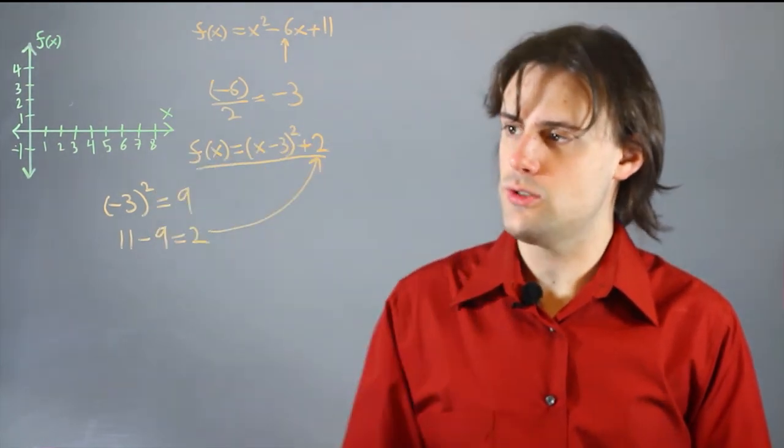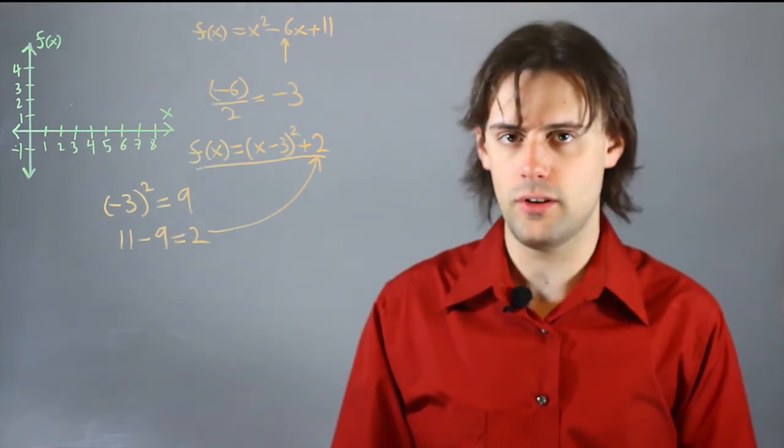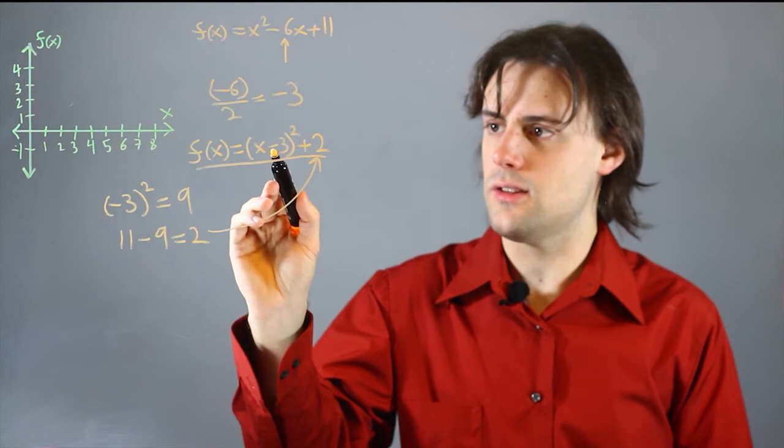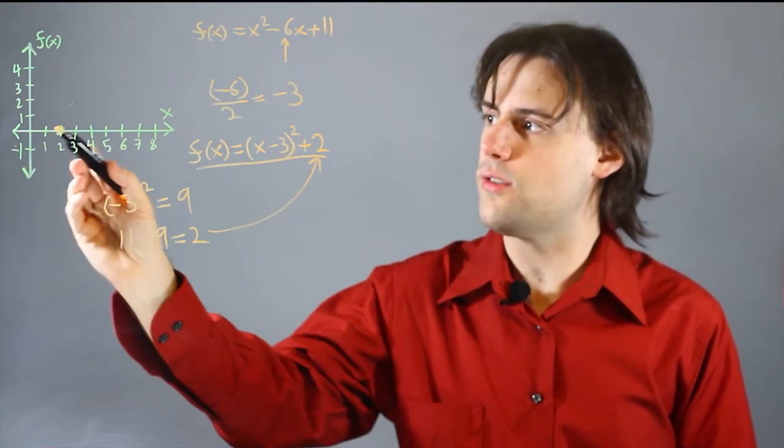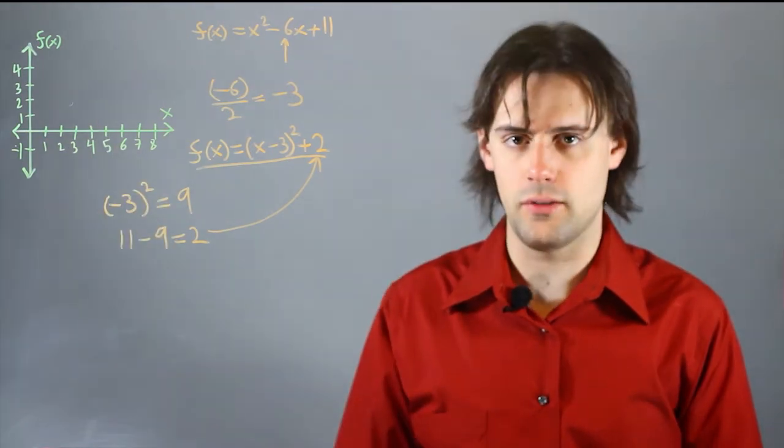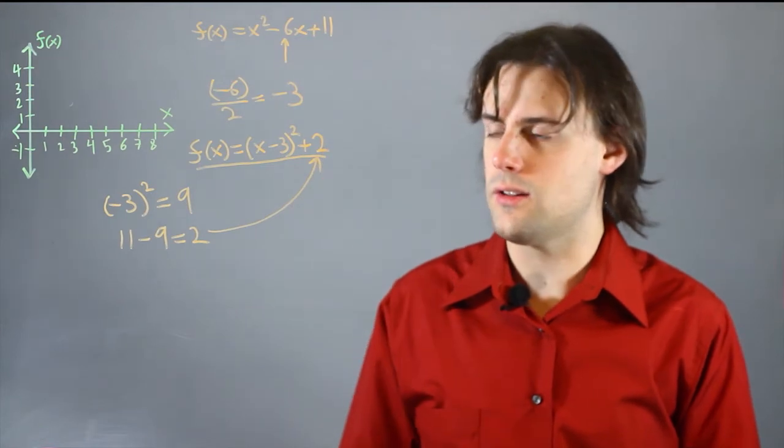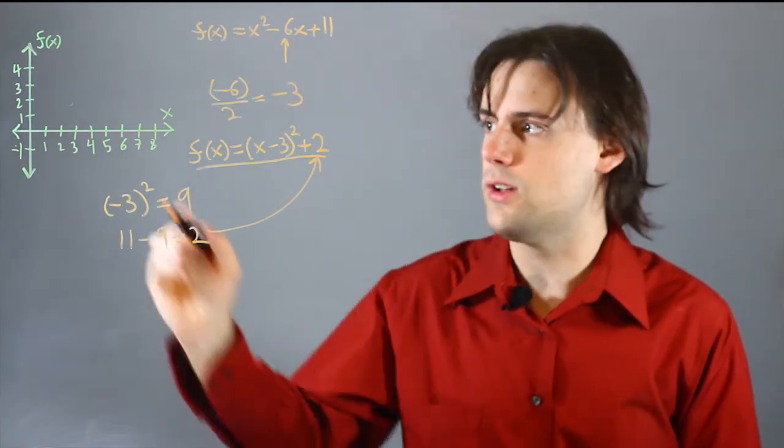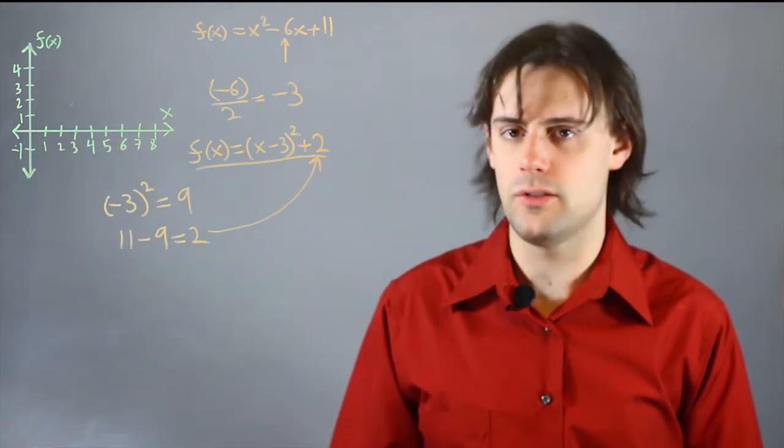Now I've rewritten my original equation in standard form and I can identify the coordinates of the vertex. In this case, this negative 3 indicates that the vertex has been moved from the origin three places to the right in the positive x direction. This positive 2 here indicates that the vertex has been moved from the origin two places in the positive y direction.